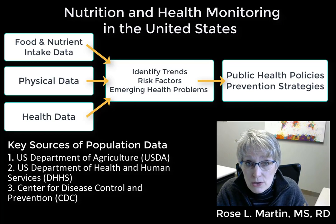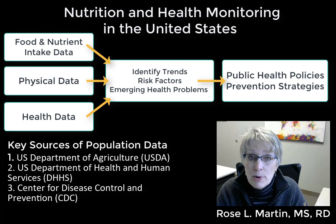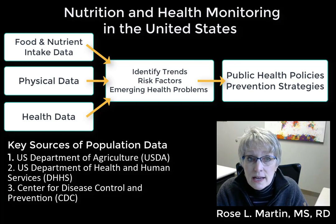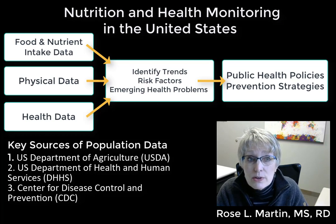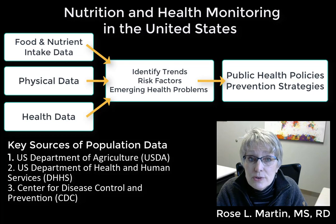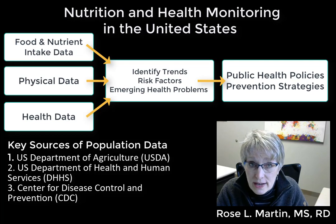The U.S. Department of Agriculture, the U.S. Department of Health and Human Services, and the Center for Disease Control and Prevention are three federal government departments with long histories of collecting food, nutrient, and health data.